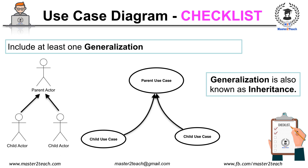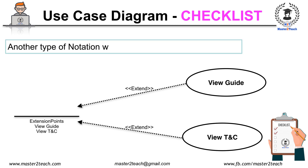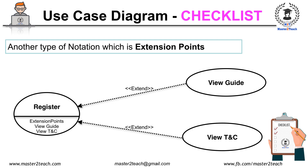Confirm that there is no label in the generalization arrow. There is another type of notation: extension points. Extension points are a detailed portion of the extend relationship and can also be shown in a note describing what condition would lead to these extension points. If possible, show at least one extension point in the use case diagram.